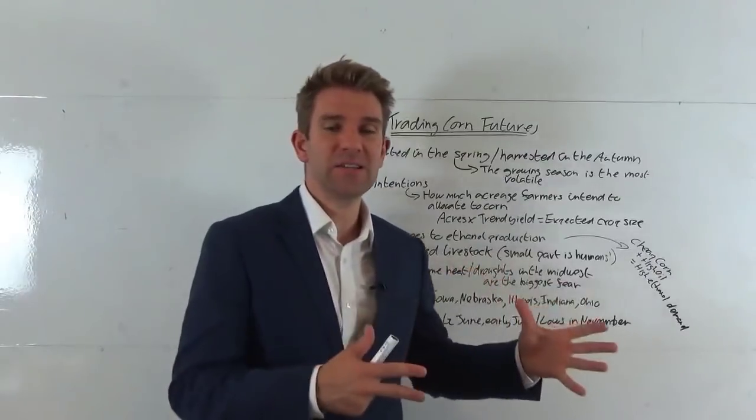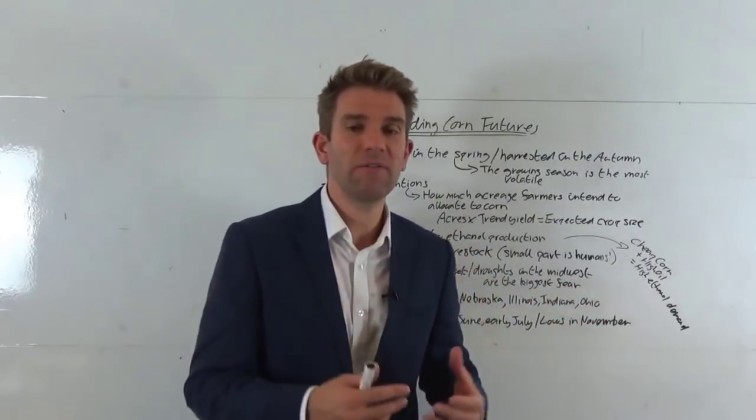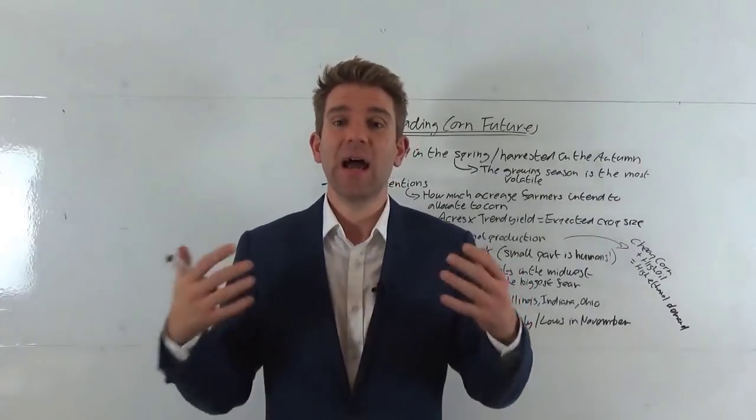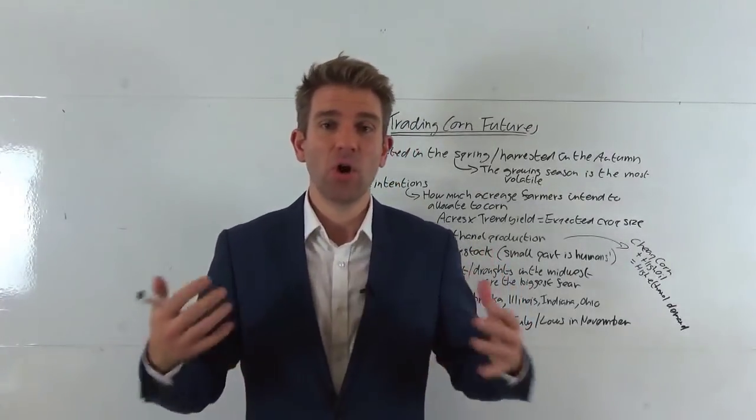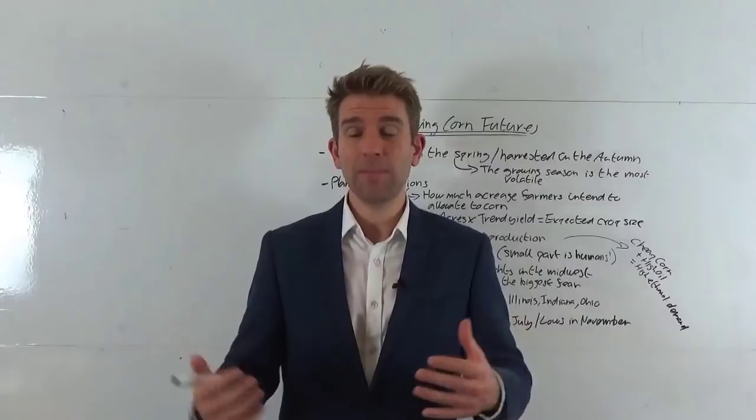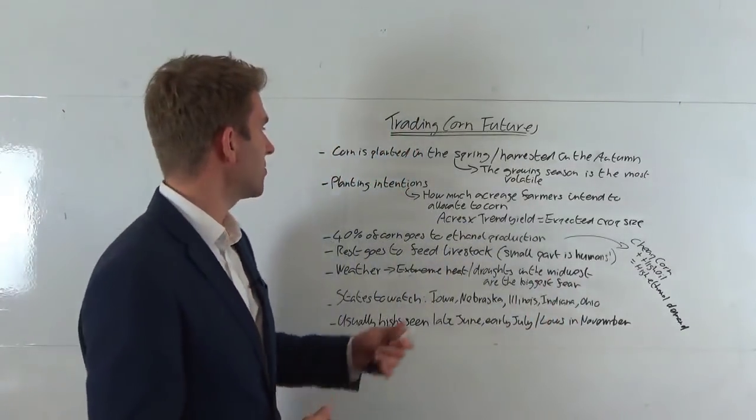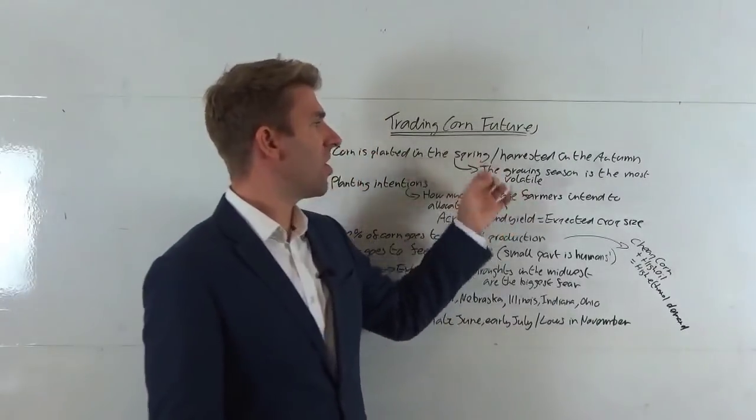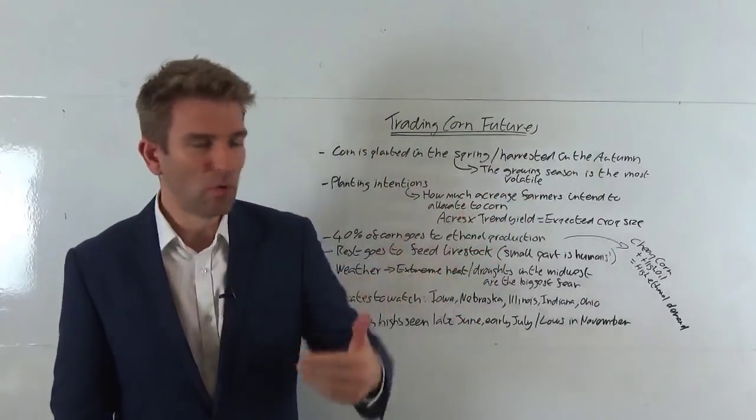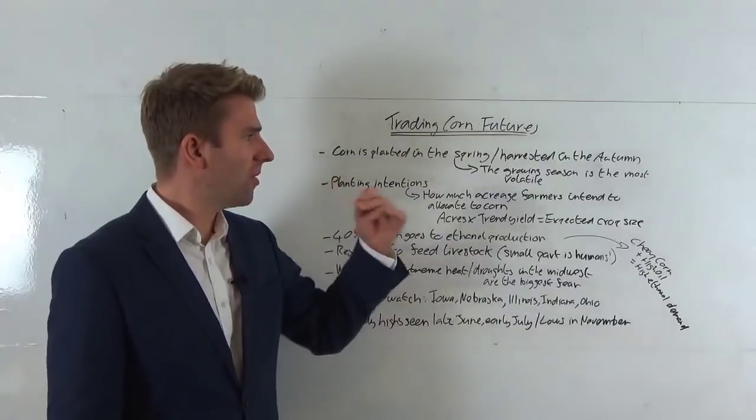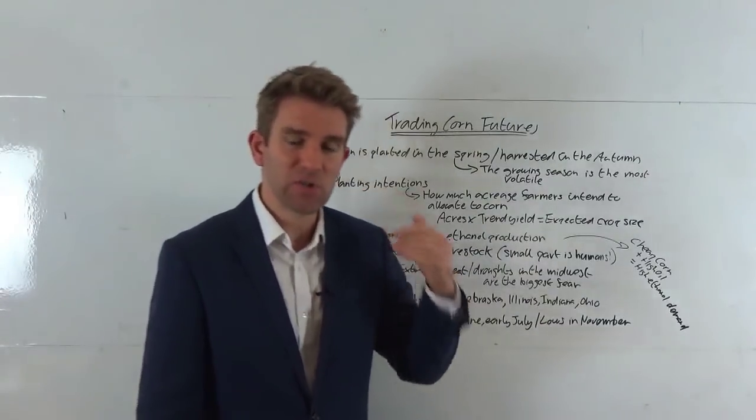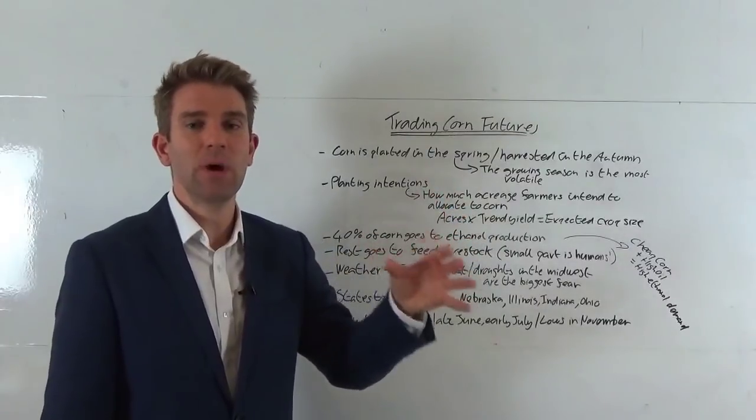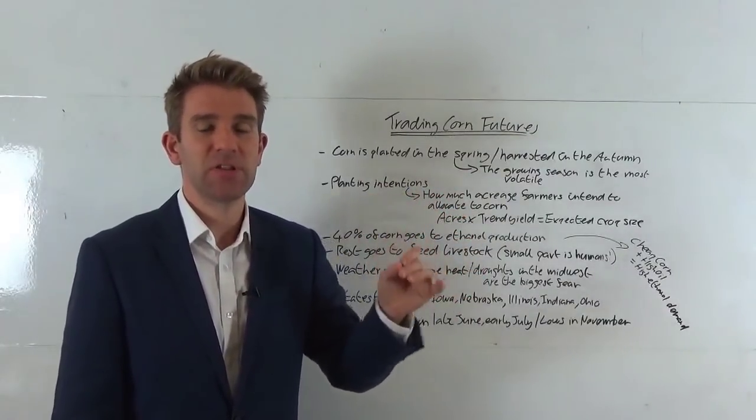So I'm going to look at corn, what it's all about, what are the tendencies, where it's grown, what can affect it, and most importantly for us as traders, how can we potentially capitalize on trading opportunities, supply demand imbalances in this specific commodity. Corn is planted in the spring and harvested in the autumn or fall. The growing season is the most volatile, so that spring to harvest season is really where the volatility kicks in potentially.